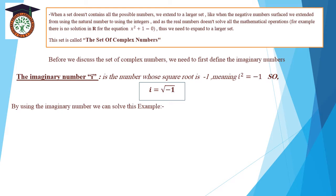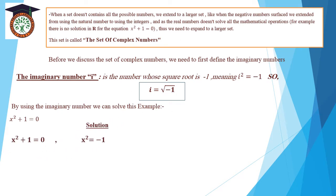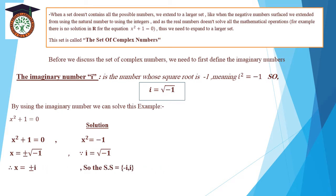By using the imaginary number, we can solve this example: x² plus 1 equals 0. Move positive 1 to the other side by negative 1. x² equals negative 1. Taking the square root: square root of negative 1 equals i. So x equals positive or negative i. The solution set equals {negative i, i}.